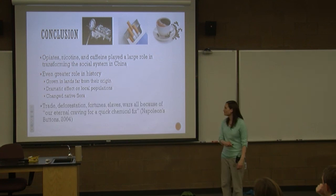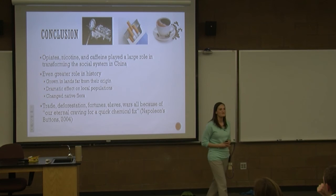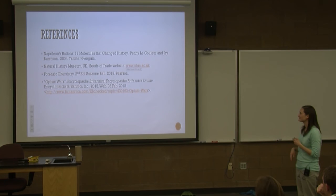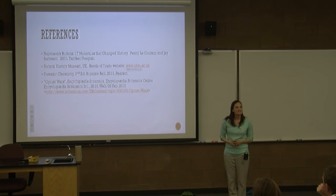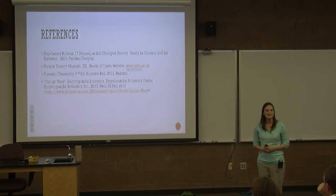These three molecules played a large role in this war and in opening up China to trade, but really they've made an even bigger impact on history. A lot of these plants were grown in lands far from their origin — requiring deforestation in South America, and slaves were brought over for the tobacco. It had a dramatic effect on local populations — not all bad, some of it drove economies, started countries, made fortunes — but it definitely had an effect on the history of our world. As the book Napoleon's Buttons put it, all of this happened because of our eternal craving for a quick chemical fix. So with that, my references include Napoleon's Buttons: The 17 Molecules That Changed History, a really interesting book — this lecture covers just three of those molecules. Thank you for coming.